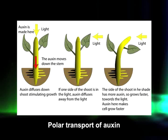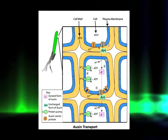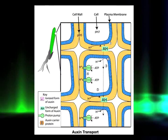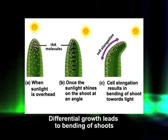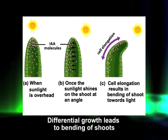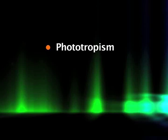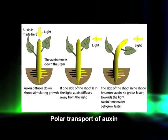Auxin is transported basipetally — that is, it moves from the apex to the base in polar transport. Auxin enters the cell from any side but leaves through the plasma membrane via auxin efflux carriers, also known as PIN proteins, preferably localized at the basal end of the cell. In lateral transport, PIN proteins are redistributed to the lateral side of the cell, allowing auxin to move laterally. This lateral, unequal distribution induces differential growth resulting in bending of plant parts in response to light and gravity.